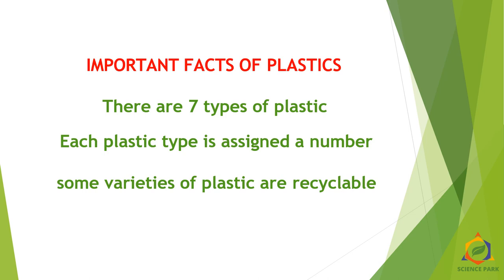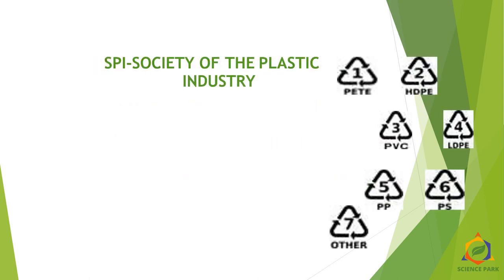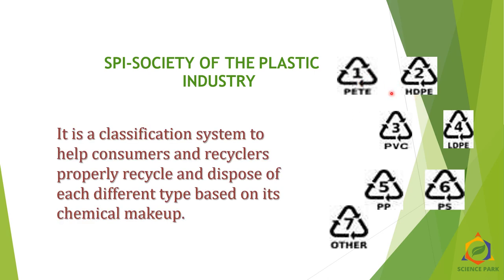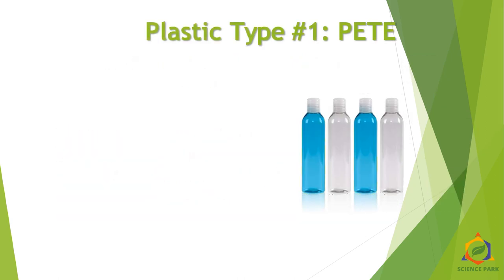There are seven types of plastic, and each type is assigned a number. The Society of the Plastics Industry (SPI) has divided plastics into seven varieties. Every plastic product has a number on it. This SPI classification system helps consumers and recyclers recycle and dispose of plastic properly. Let's see each type one by one.